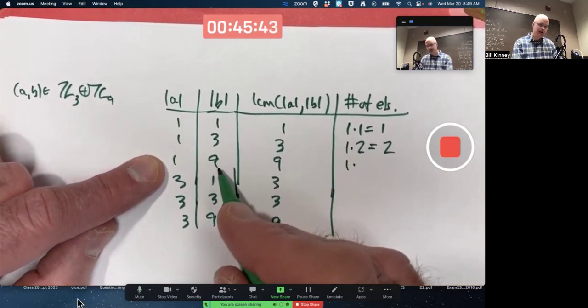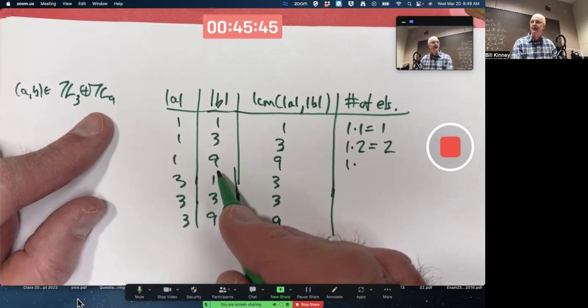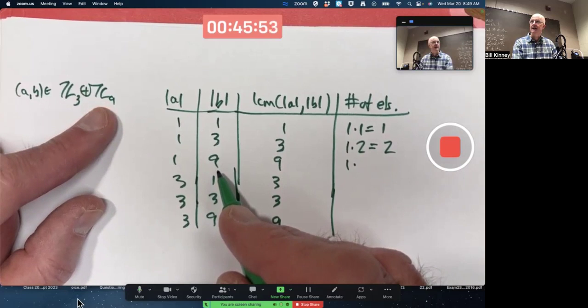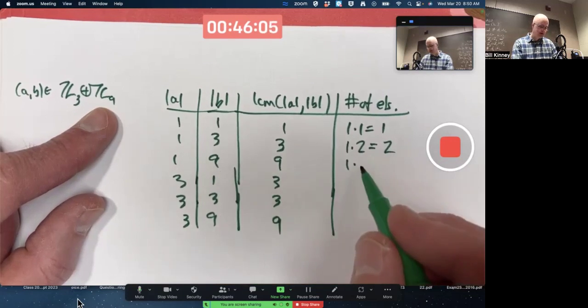How many elements in Z9 have order nine? What are the generators of Z9? It's a cyclic group, just the Z9. One, the numbers, positive integers less than nine that are relatively prime to nine: one, two, four, five, seven, eight. There's six of them.